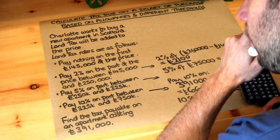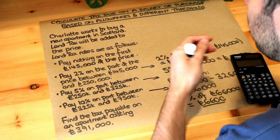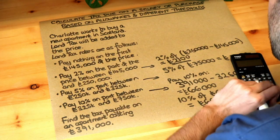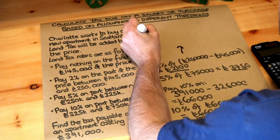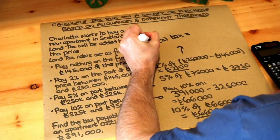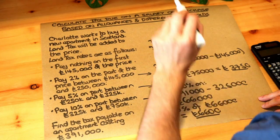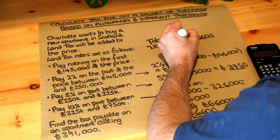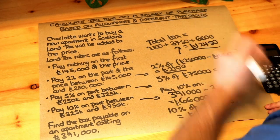Finally, we pay nothing on the first £145,000 of the price — quite similar to salaries, where you usually don't pay tax on the first portion of earnings. So the total amount of tax is £2,100 plus £3,750 plus £6,600. Putting that into the calculator gives us £12,450 in tax, and that is the final answer.